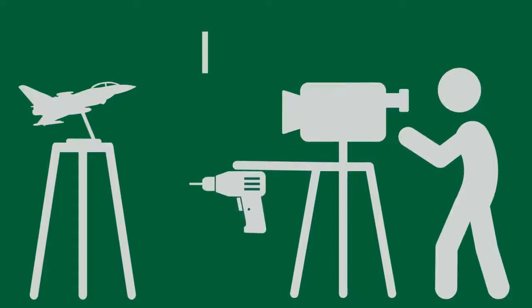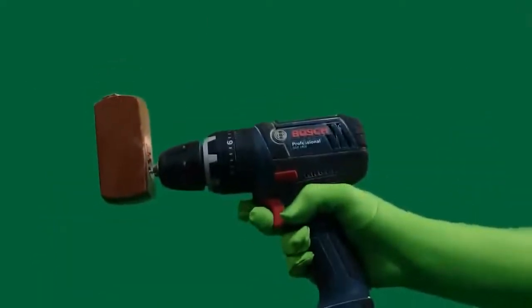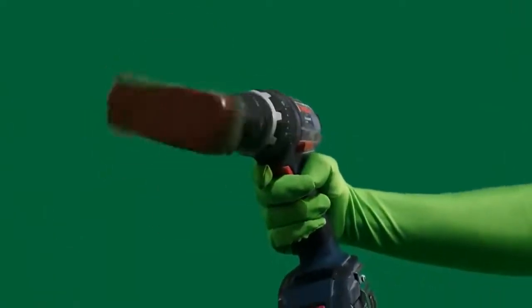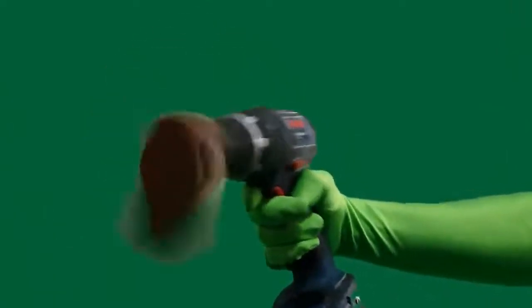So, to remedy this, the effects team attached a drill to their camera rig with an off-centred mass attached to the drive shaft. By increasing the drill's speed, the team could control the amount of vibration that appeared on their explosion shots. You can actually see this happening on the looped explosion footage — notice how the vibration seems to be rotating, just as the drill would.